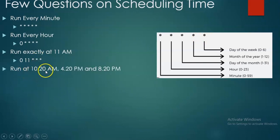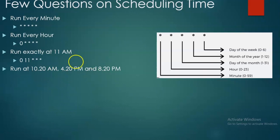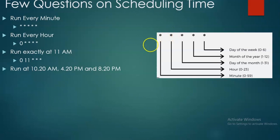I need to run exactly at 10:20, 4:20, and 8:20 — that is three times in a day. For minutes, instead of star we give 20. For hours, I need 10 AM, 4 PM (which is 16 in 24-hour format), and 8 PM (which is 20). So the hours field becomes: 10,16,20. The syntax is: 20 10,16,20 * * *